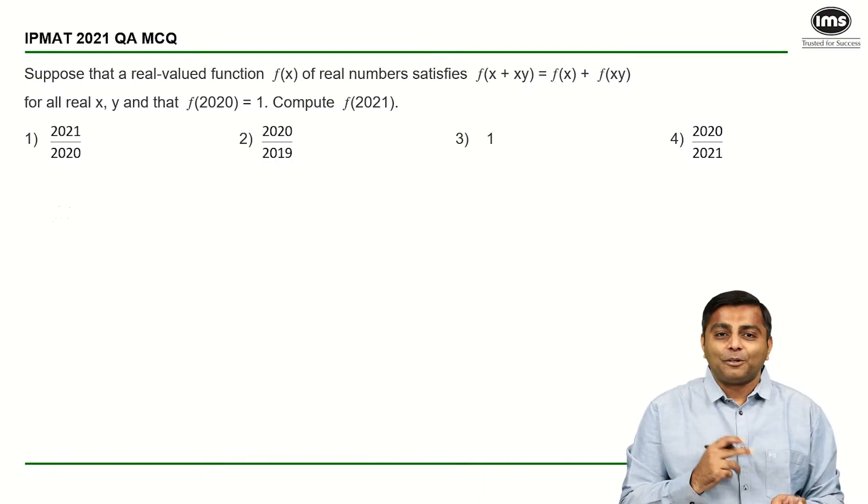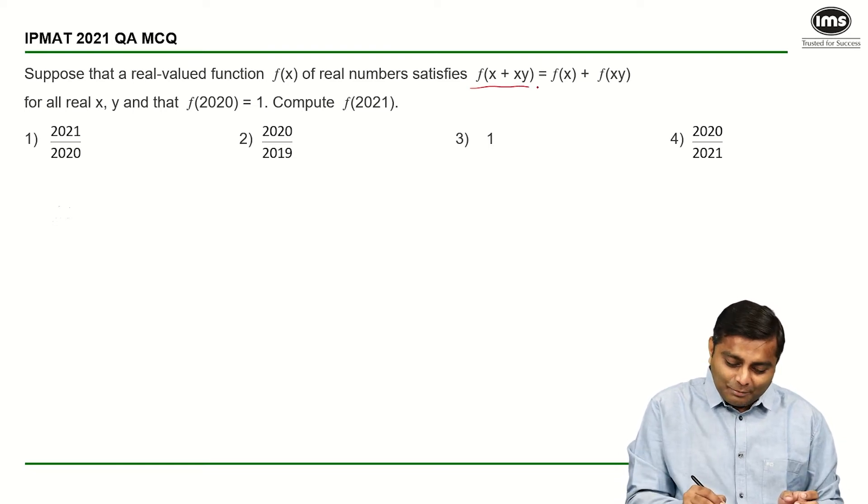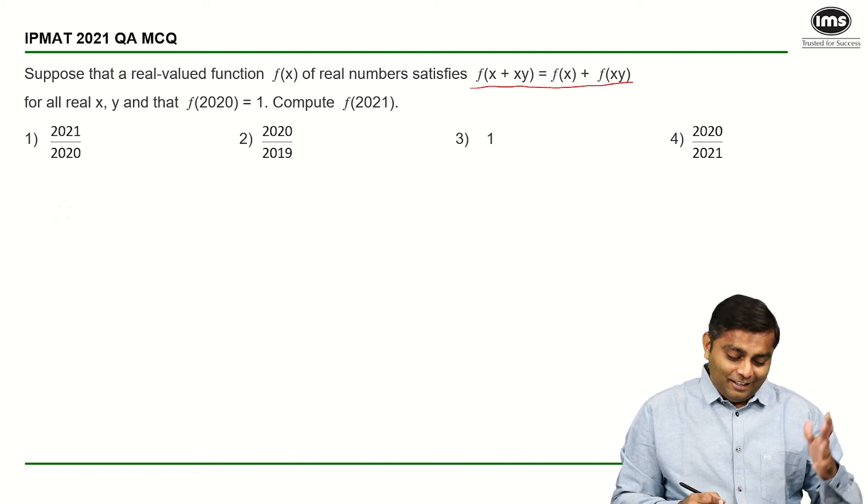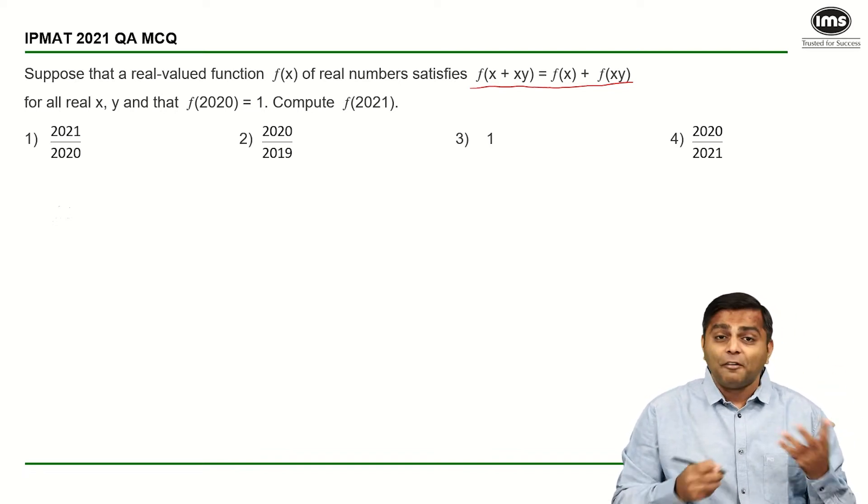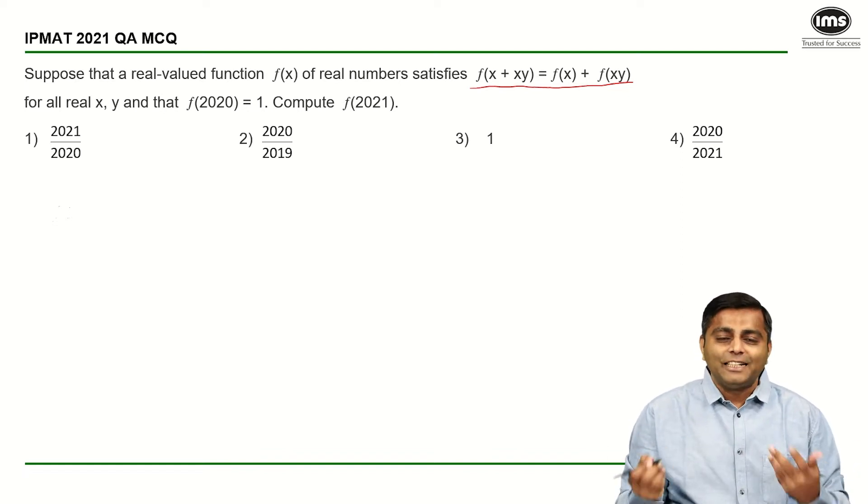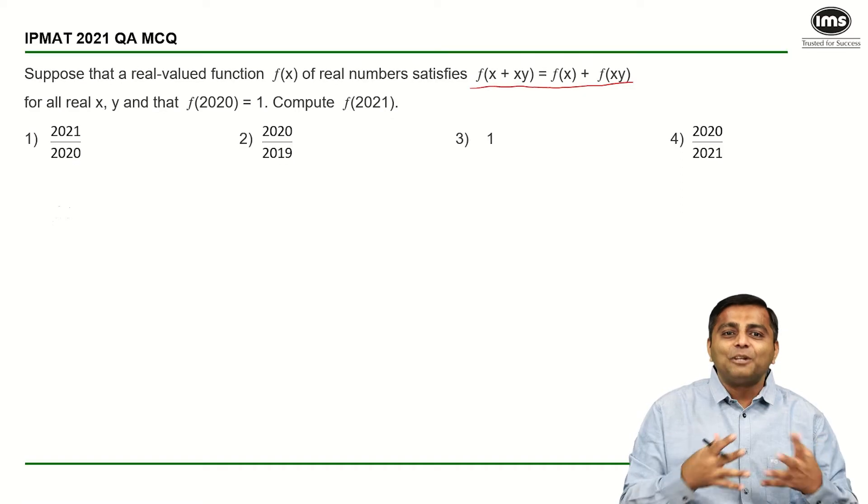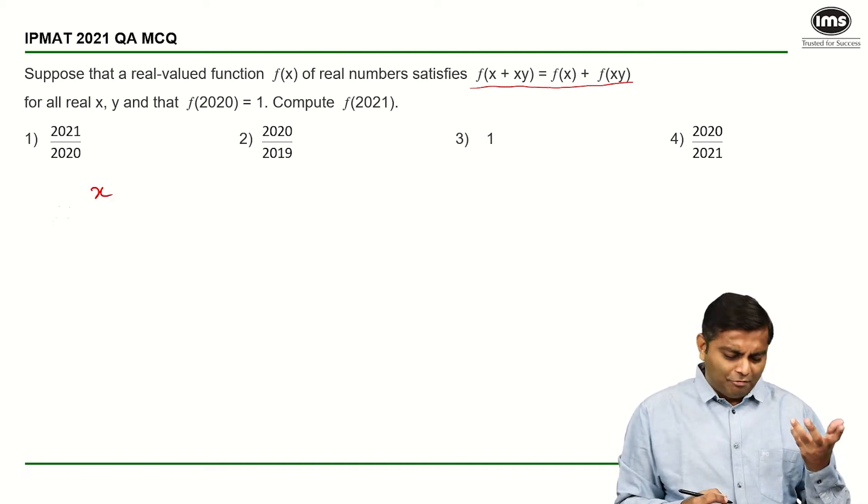The function is a little tricky. f(x+xy) = f(x) + f(xy) and we have to go as far as 2021. We are asked f(2021), we are given f(2020) = 1. Let us see what we can do with it. Let us start with smaller values.